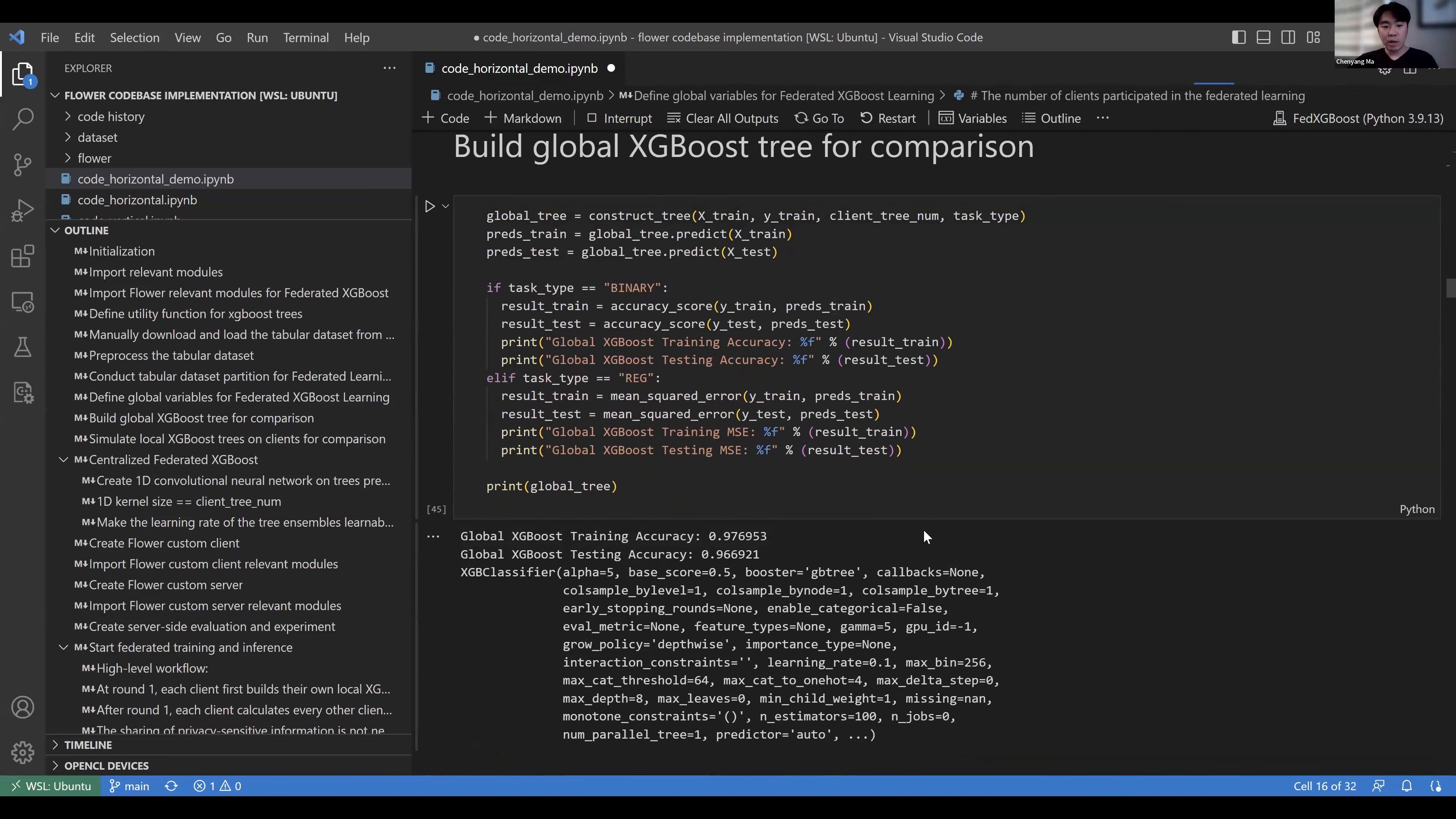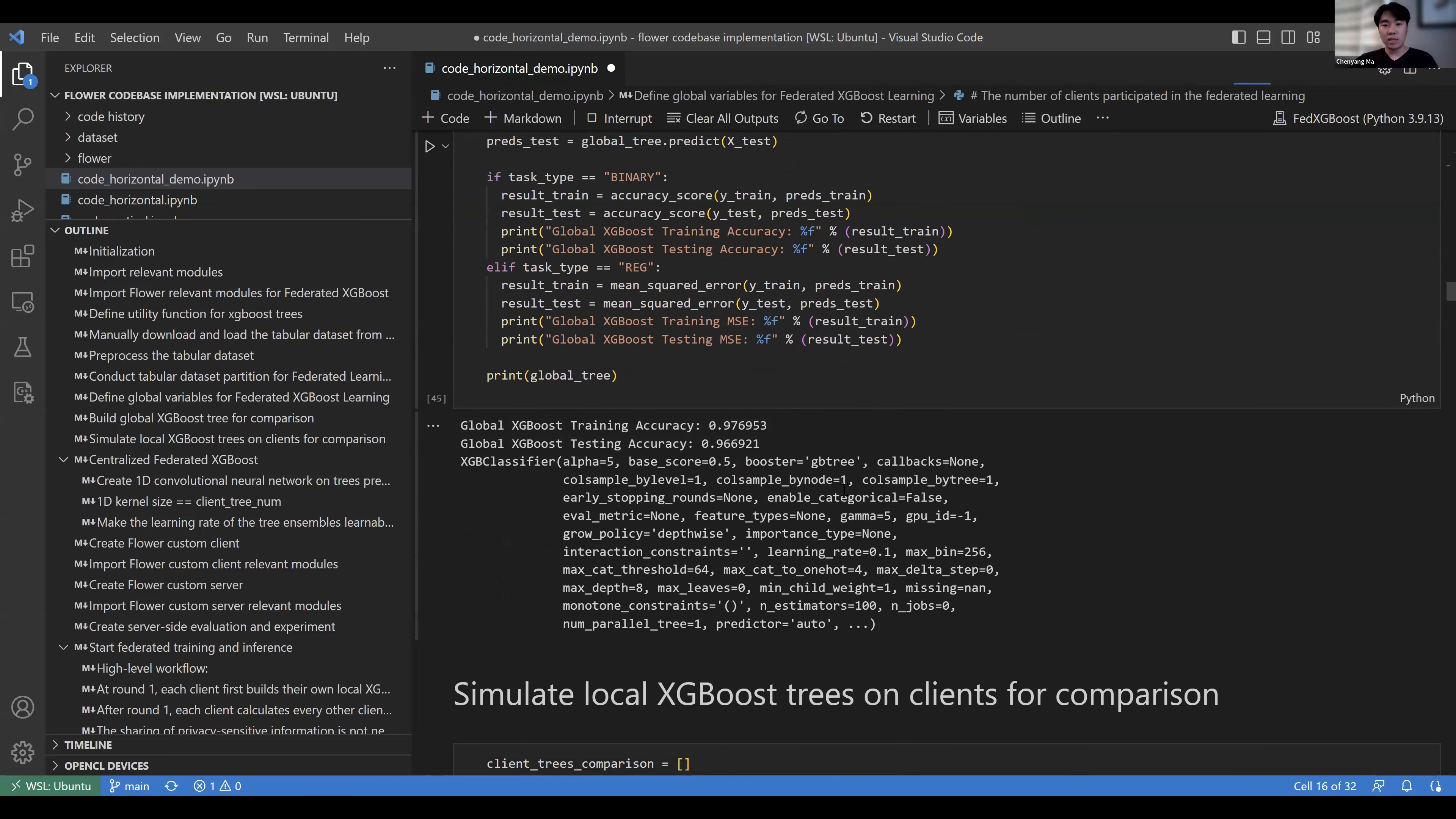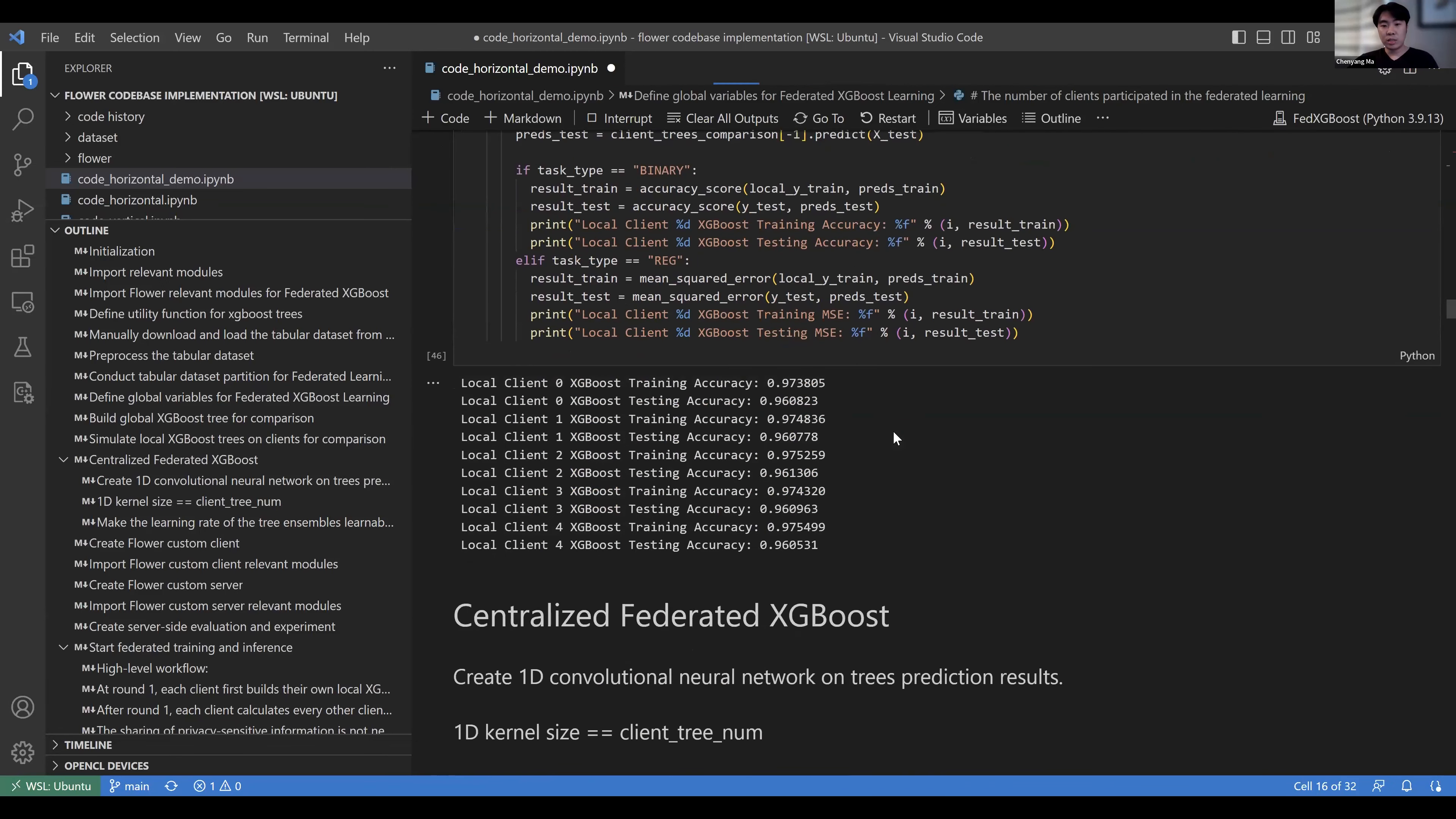In this section for comparison purposes, we first build a global XGBoost model on all clients' data sets. We can see the test accuracy is around 0.966. Then we also simulate the XGBoost model on each client's local data sets. We can see that the accuracy is slightly lower, around 0.96.